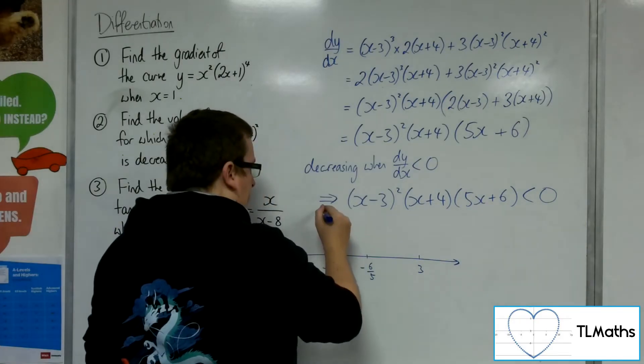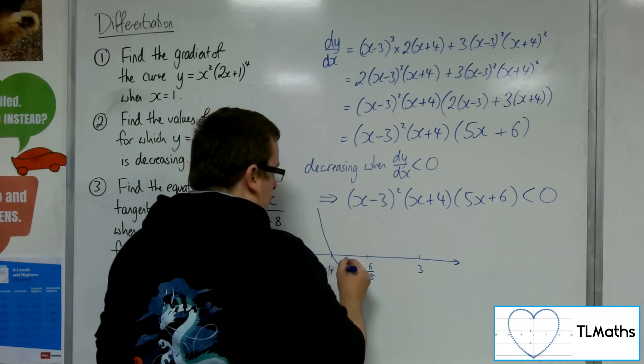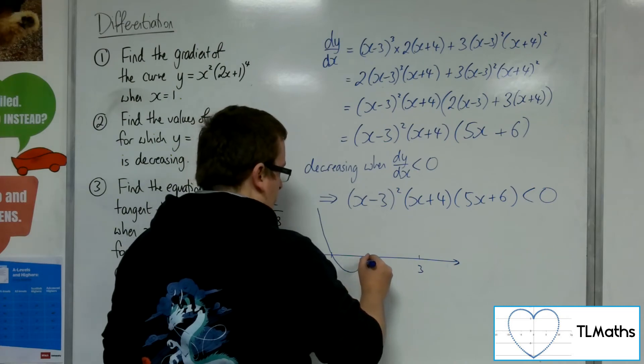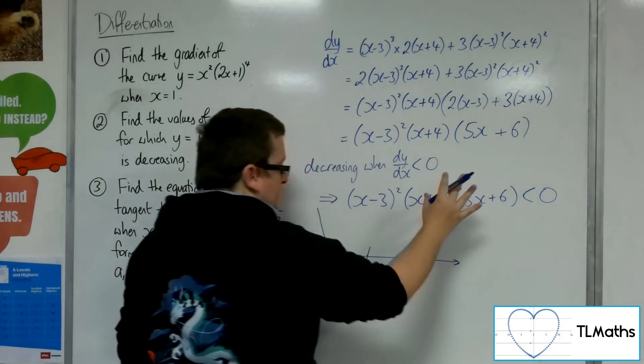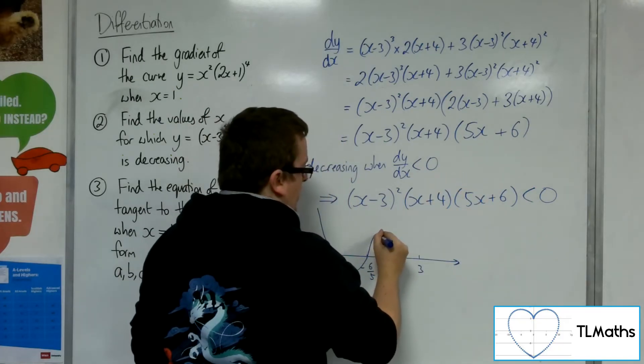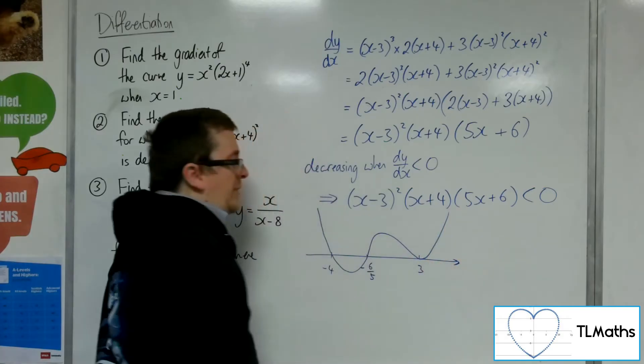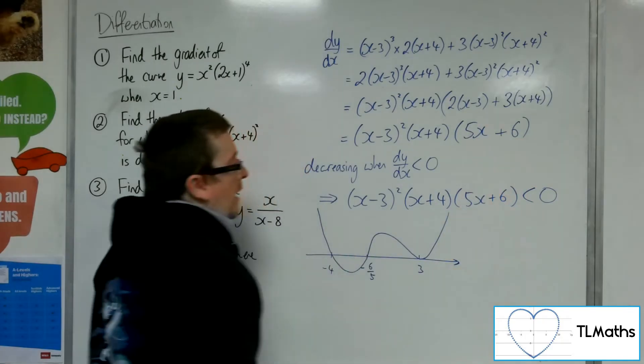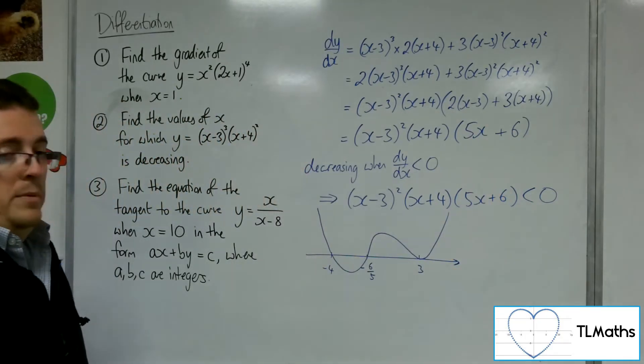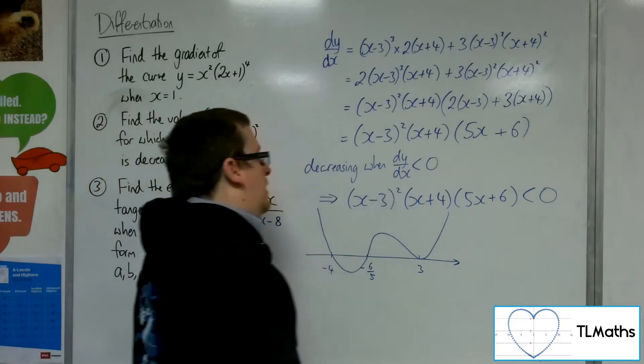Now it's going to come around and go through minus 6 fifths. Now remember, it's going to end up in the top right. So it's going to have to have come back around and then brushed the x axis at 3 in order to then travel upwards and end up in the top right. So this is what the curve looks like.